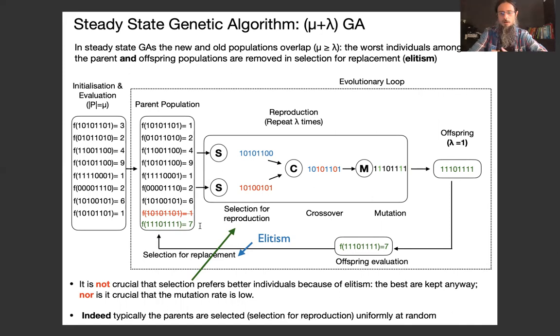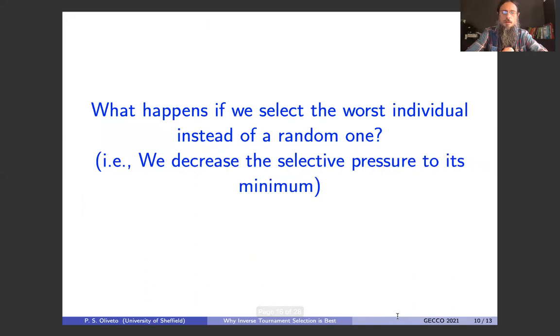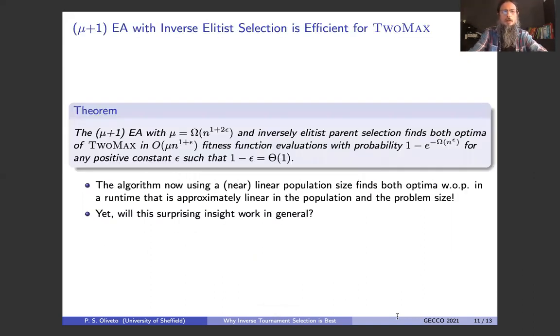This actually means that it is not crucial that selection prefers better individuals because of this elitism. The best individuals will be kept anyway. And indeed, typically, parents are selected for reproduction uniformly at random, exploiting the fact that it is not needed to select the best ones. So what we argue in this paper is why not prefer the worst ones? As a proof of concept, let's see what happens if we select the worst individual as parent instead of a random one. So we decrease the selective pressure to its minimum. Then let's not read the theorem again, but what this theorem says is that the algorithm now, using more or less linear population size, finds both optima of TwoMax with overwhelming probability in a runtime that is approximately linear in the population and problem sizes.